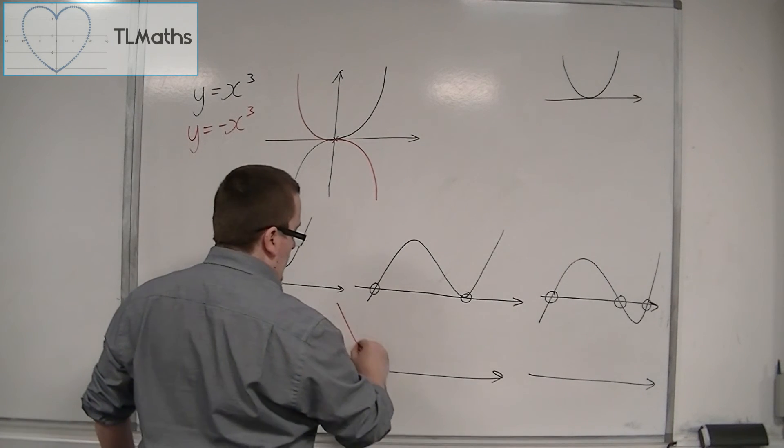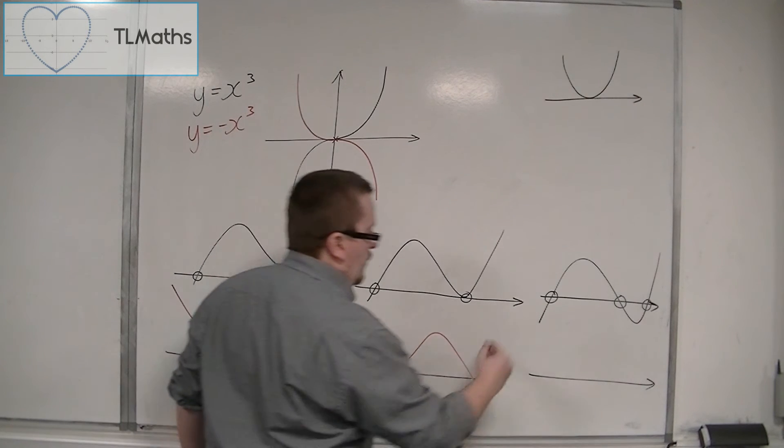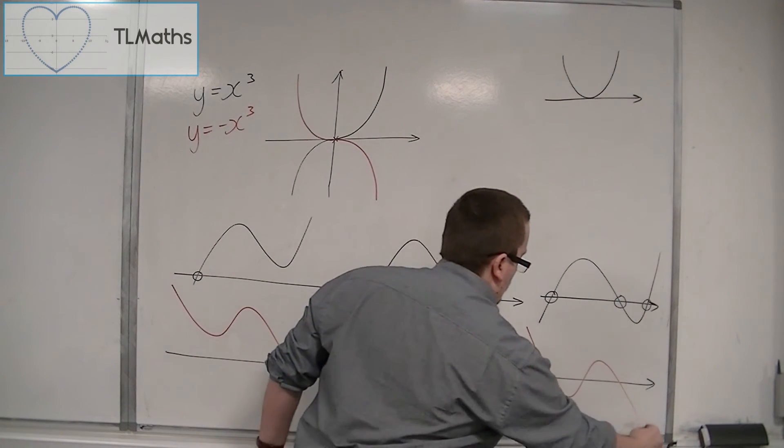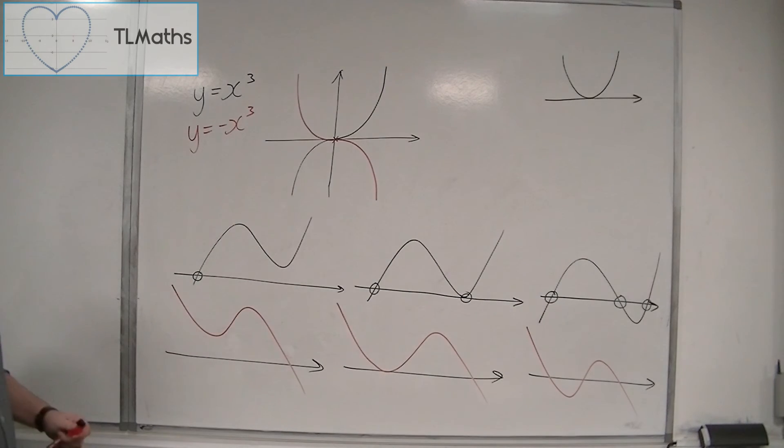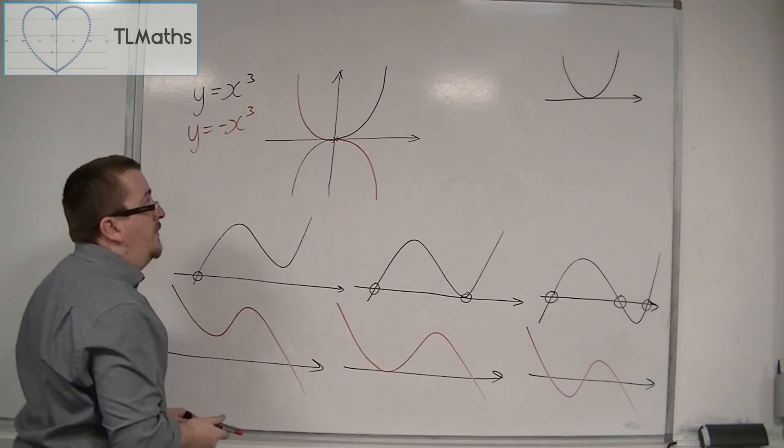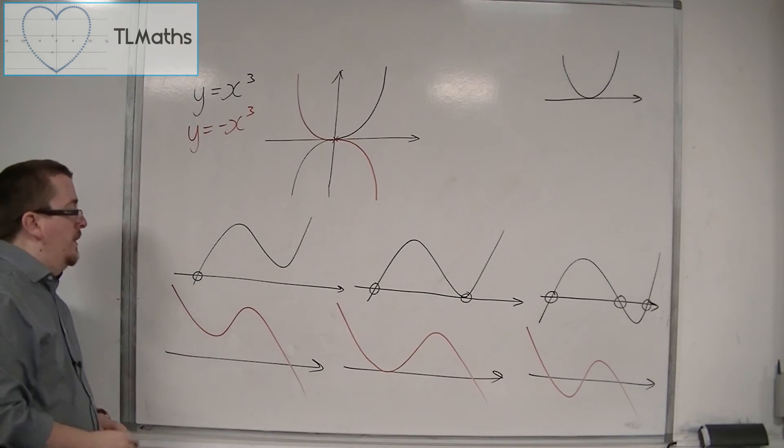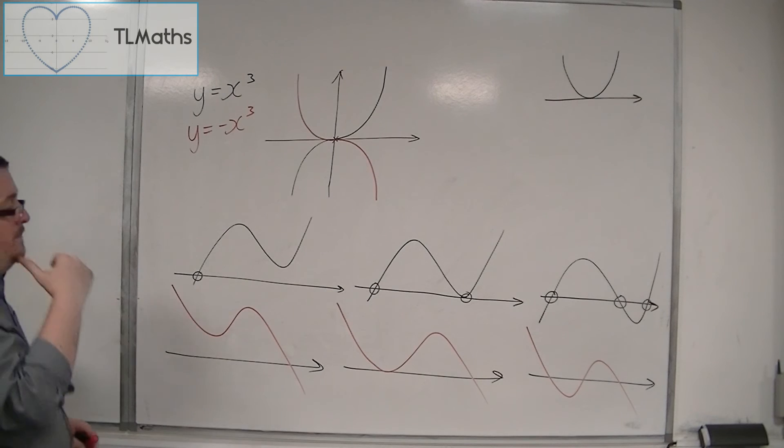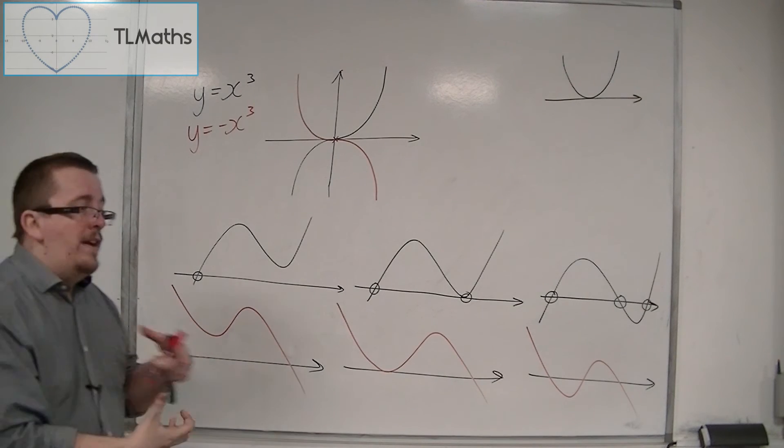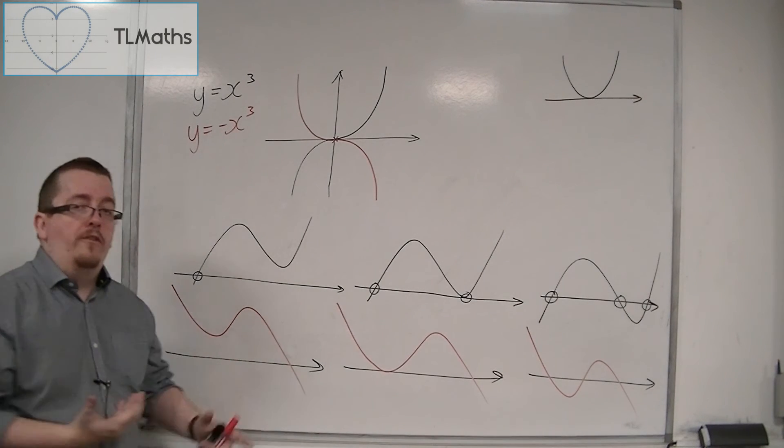Or this. So these are all positive x cubeds, and these are all negative x cubeds. So in this way, you can start to see that there are variations in the shape of cubics.